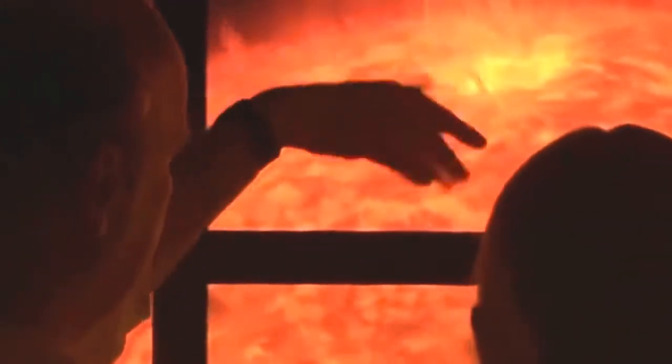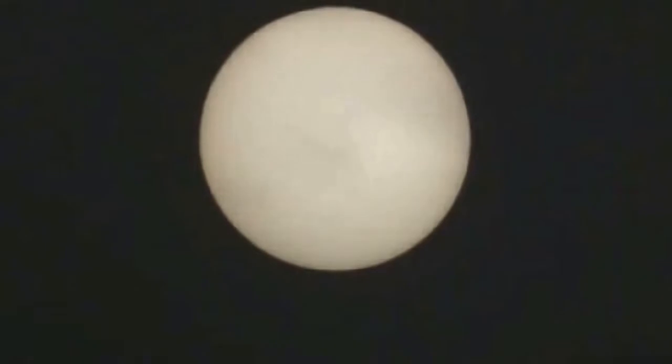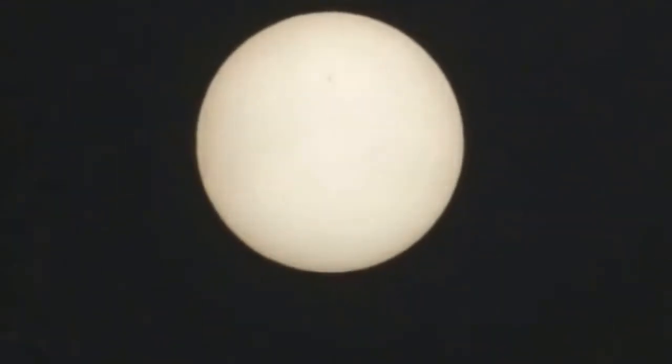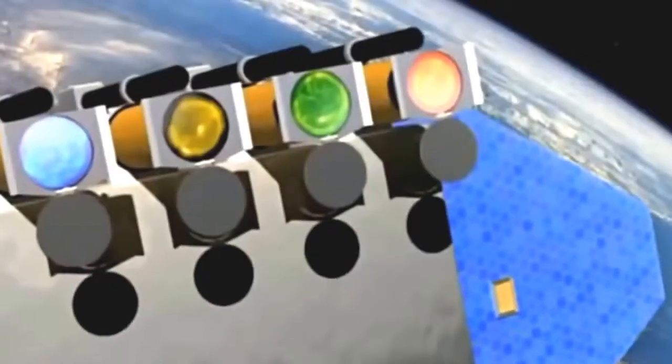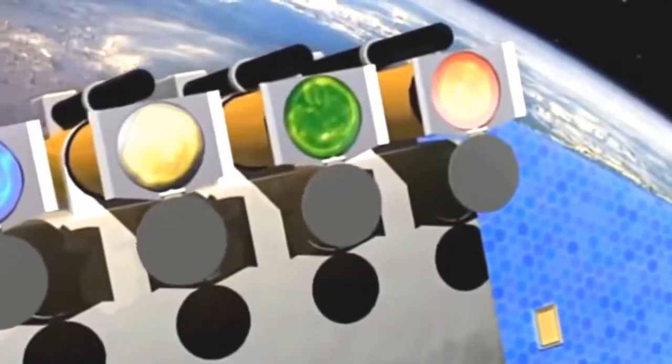One of the most important aspects of SDO is its ability to see sunlight across a range of wavelengths, the equivalent of looking at things glowing at different temperatures. Our eyes are most sensitive to sunlight glowing at around 10,000 degrees Fahrenheit. At this temperature, the sun's surface looks almost featureless.